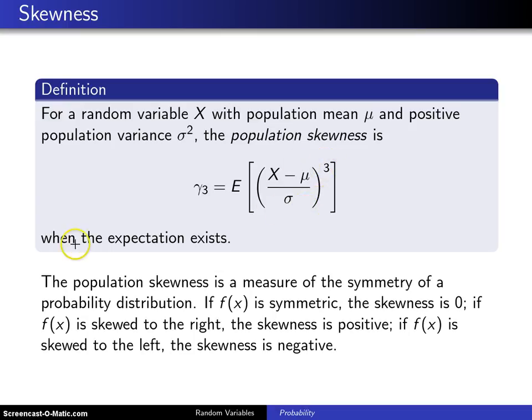Sometimes this standardized random variable here is known as a centralized, and that's what happens when you subtract mu, standardized random variable. So you could say that this is the expected value of the third moment of the standardized centralized random variable.